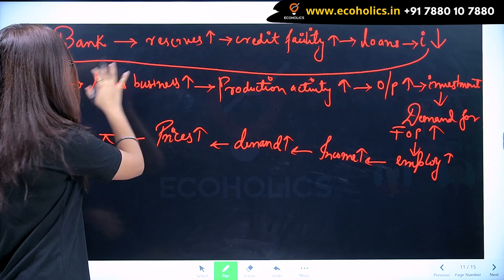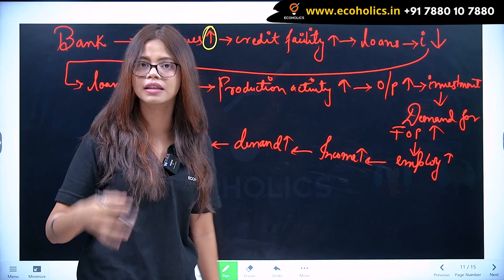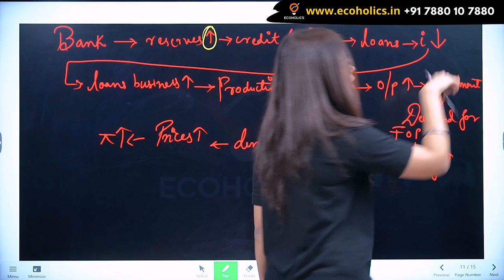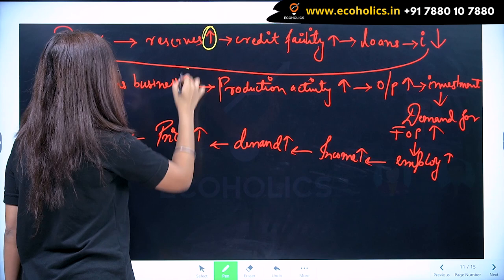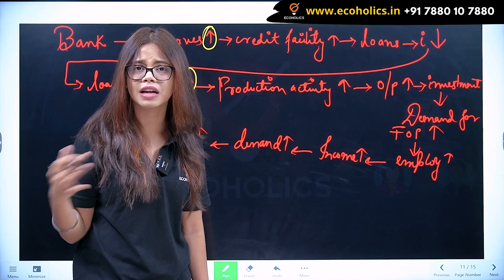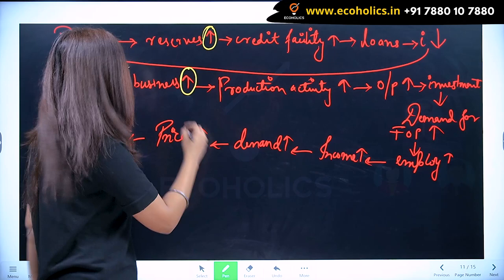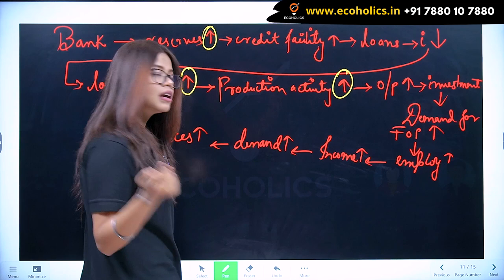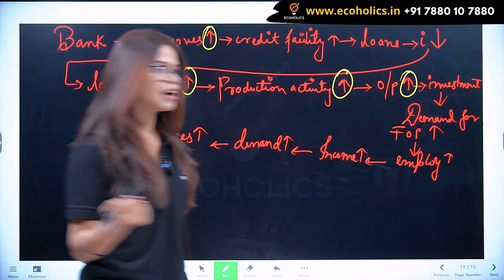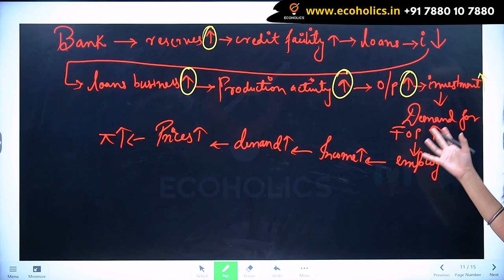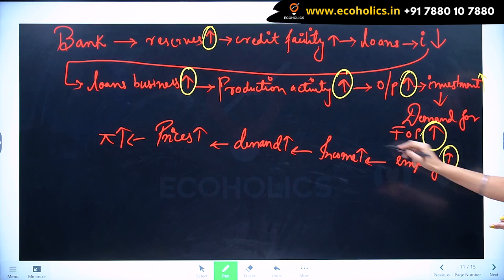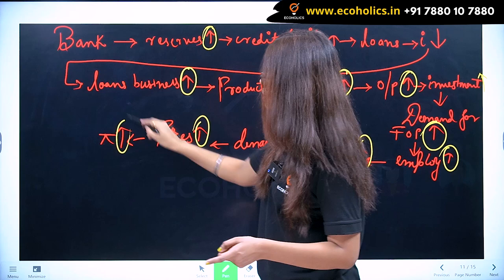Now what is increasing here at banks? They wanted to increase their credit facility — more loans. The interest rate is reduced, and because of that the loans to businesses increased. With technological advancement they pay for inventory. Production activity increases, output has increased, investment has also increased. The demand for factors of production has increased, employment has increased, income has risen, demand has risen, prices and profit.